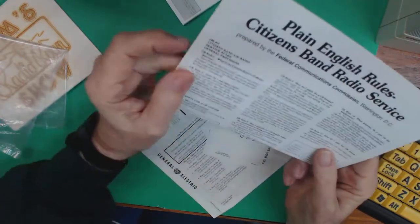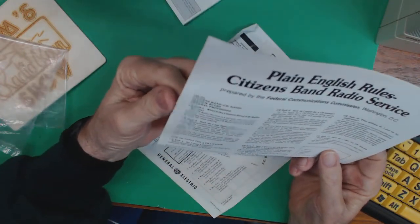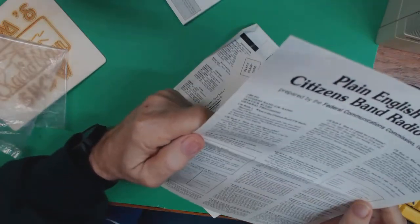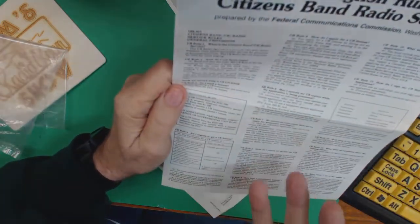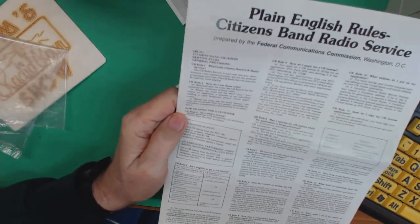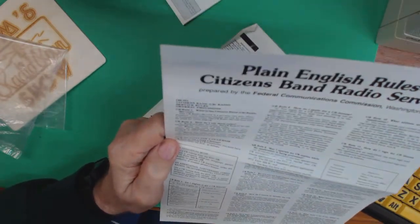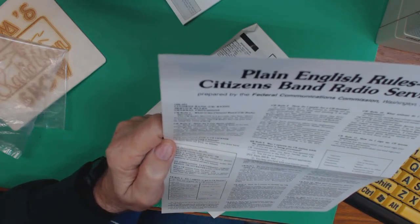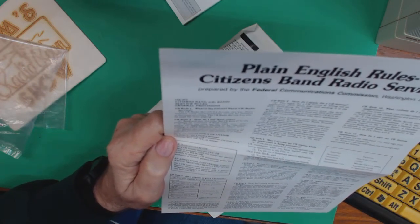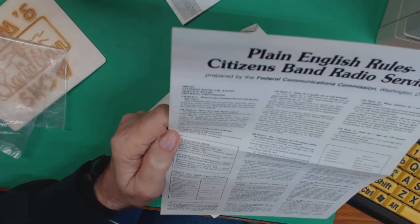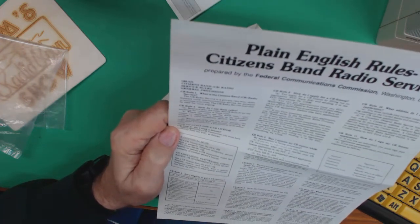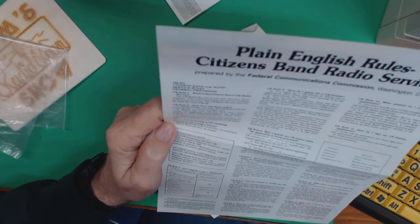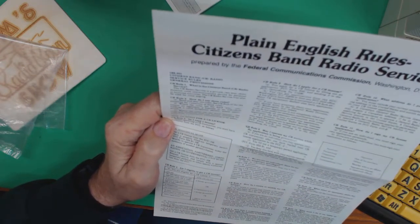And this is Plain English Rules Citizen Band Radio Service. It tells you how to, back then you had to apply for a license. It tells you what you had to do, who's eligible for a license. I don't think there was any cost involved. And that's all you had to do, you just had to apply for the license and get the license.